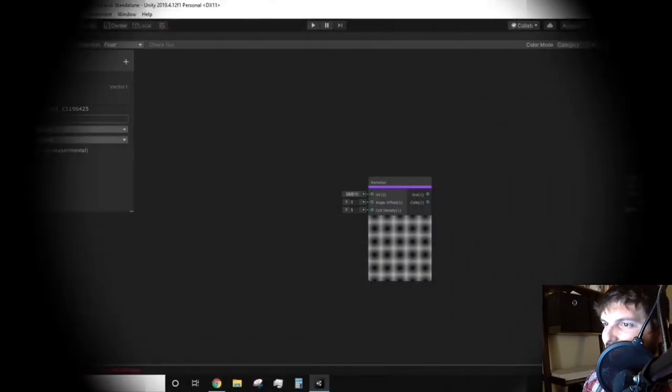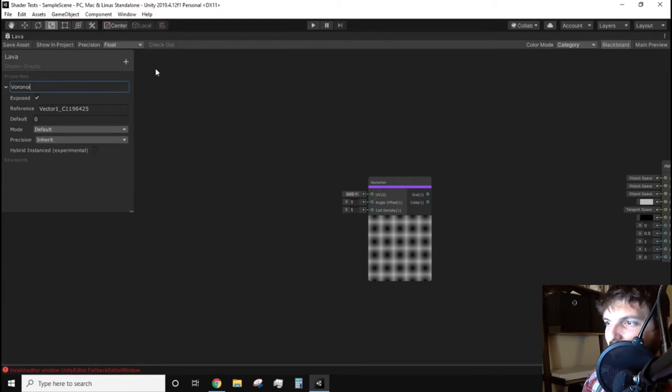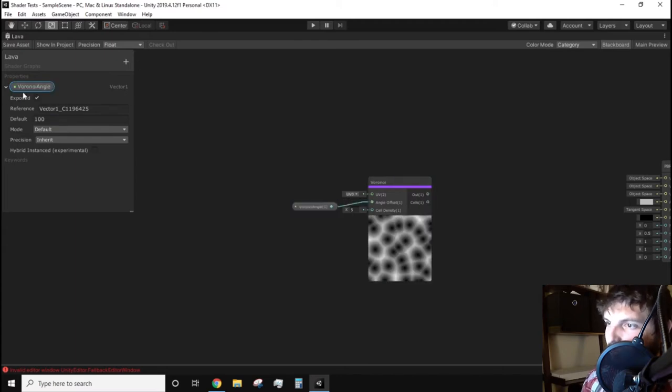I want to easily control the angle and cell density so let's make two vector one properties in our blackboard. The first will be labeled Voronoi angle and the second will be Voronoi density. Drag these out and plug them into the appropriate slots.